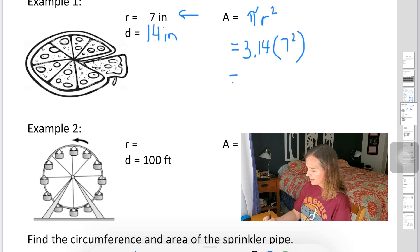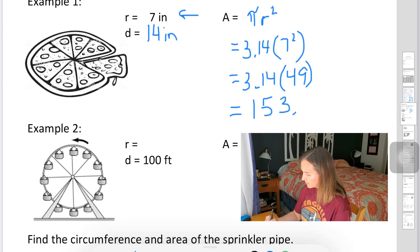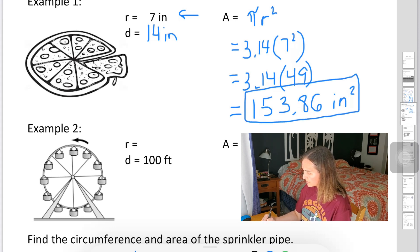Again, order of operations, I have to use my exponent first. So it's going to be 3.14 times 49, because 7 times 7 is 49. And then we multiply those out. Answer becomes 153.86. And our units are in inches. We're talking about area. So we have a squared there on our units.